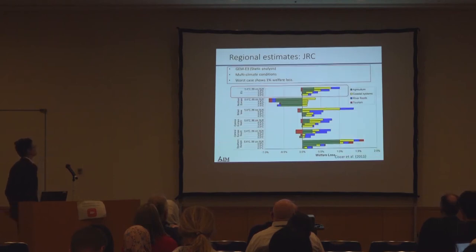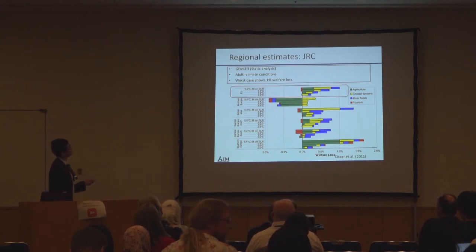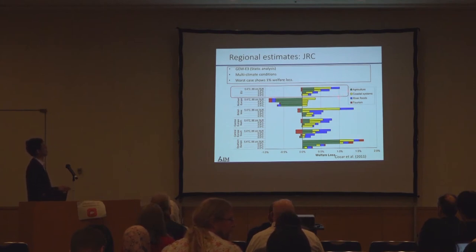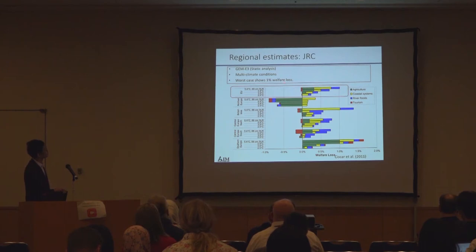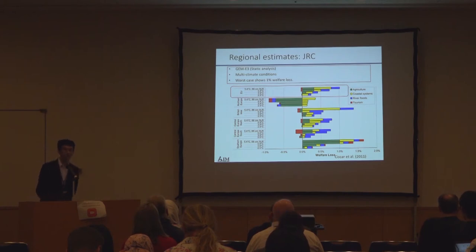Here I give you another example led by JRC, which was not covering the global scale but focused on European regions. The summary of the study shows that EU total welfare loss at maximum is around 1% in the 2070s. They consider multi-climate conditions, so if we stabilize the climate, it can be small — something like 0.2% to 0.3%. But this shows regional variety: Northern European countries basically have a benefit from warming, while Southern European countries would suffer negative impacts of climate change.